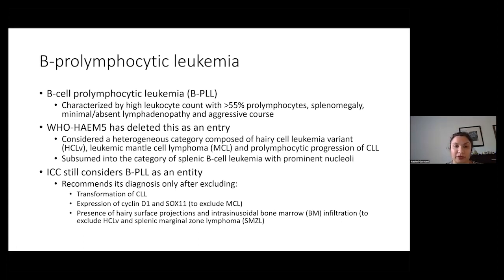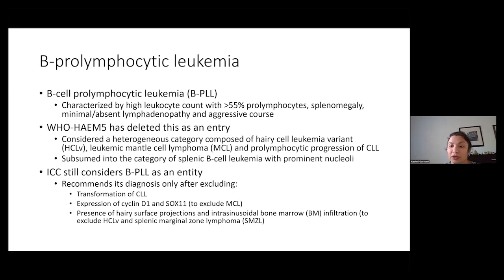B prolymphocytic leukemia is an entity that's been eliminated from the fifth edition of the WHO. In the fourth edition, it was characterized by a high white count with greater than 55% prolymphocytes, splenomegaly, minimal or absent lymphadenopathy, and a fairly aggressive course. The WHO fifth edition has considered this a heterogeneous category composed of various different types of leukemias and lymphomas. They believe some hairy cell leukemia variants have been misdiagnosed as BPLL, as well as leukemic mantle cell lymphoma and prolymphocytic progression of CLL. It's all been subsumed into a new category known as splenic B cell leukemia with prominent nucleoli.